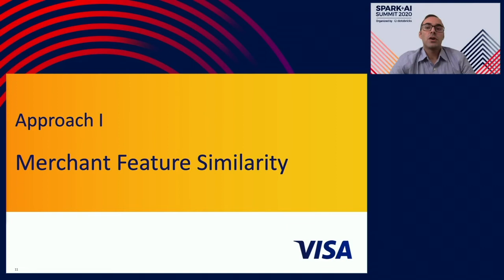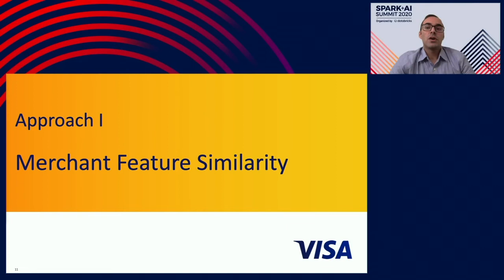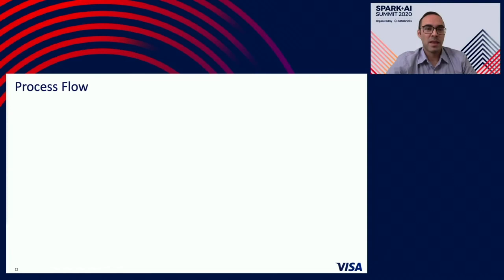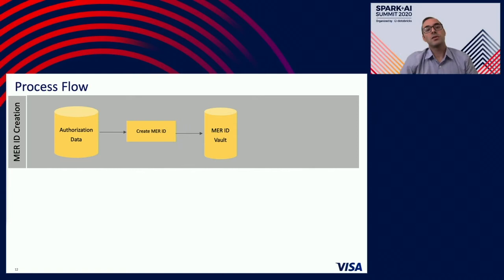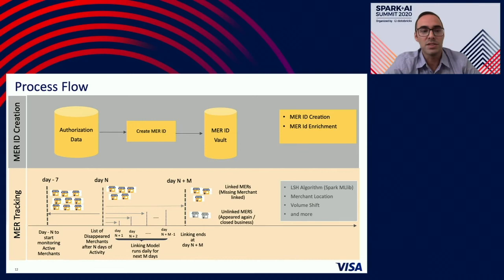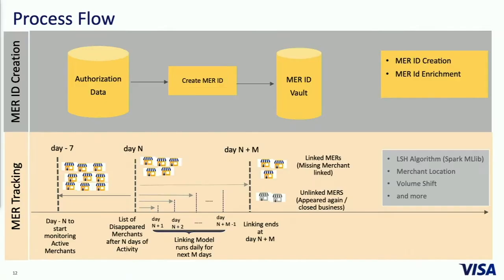We want to talk about the first approach, which is the merchant feature similarity approach. Here we have the process flow. We talk about first the merchant ID creation. We look at our authorization data, then create our MER IDs, and at the end we have a merchant ID database. We create the merchant records and enrich them. Then we have merchant tracking. We start with the list of disappeared merchants, calculating that by looking at merchant activity from day minus N — in this case, seven days prior.